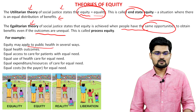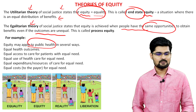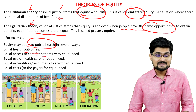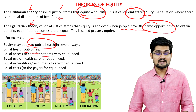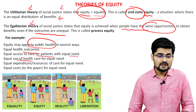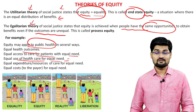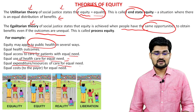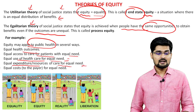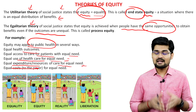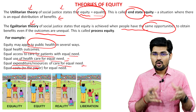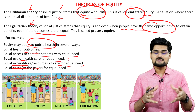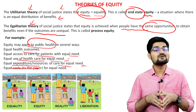Equity may apply to public health in several ways — for example, equal health outcomes, equal access for patients, equal need, and equal use of healthcare for equal need. Also equal expenditure of resources of care for equal need, and equal costs to the payer for equal need. All these aspects are talking about equity in terms of the egalitarian principle.